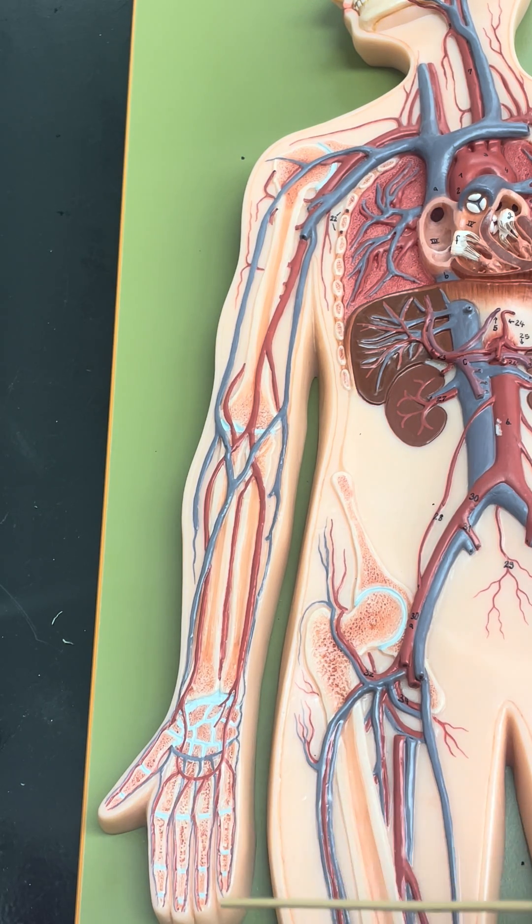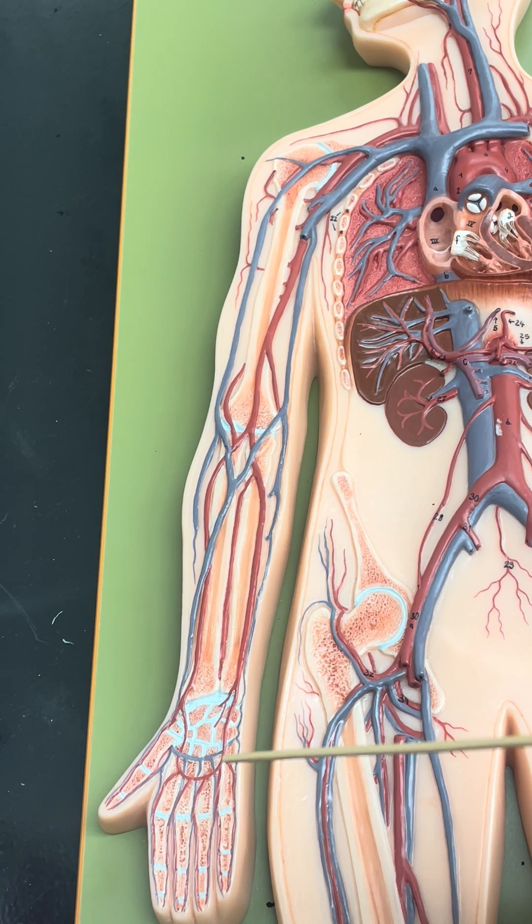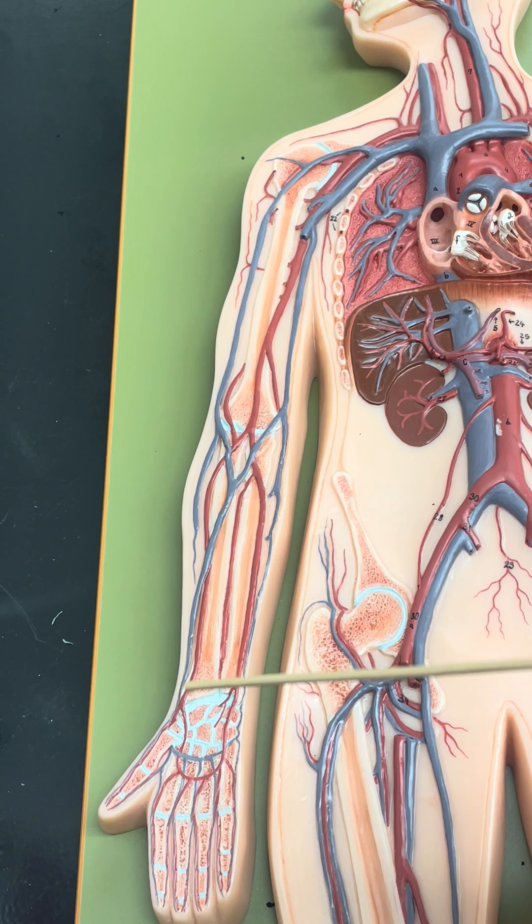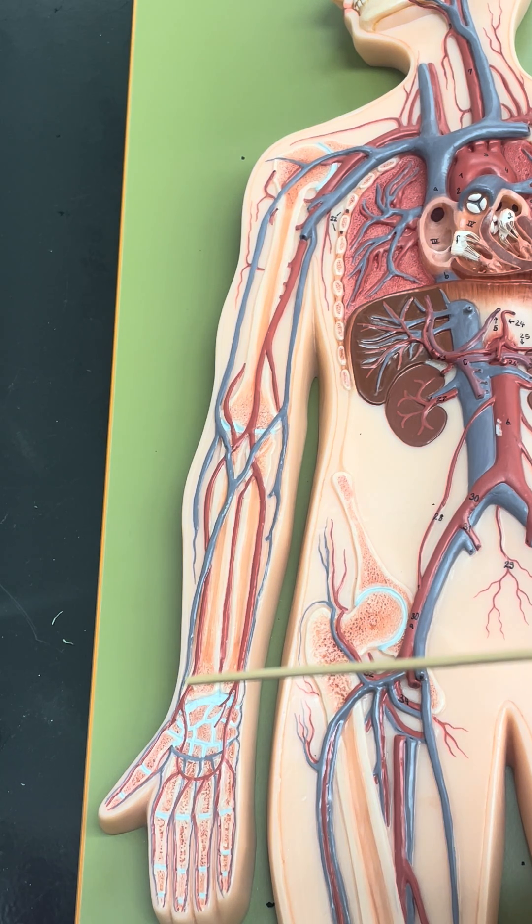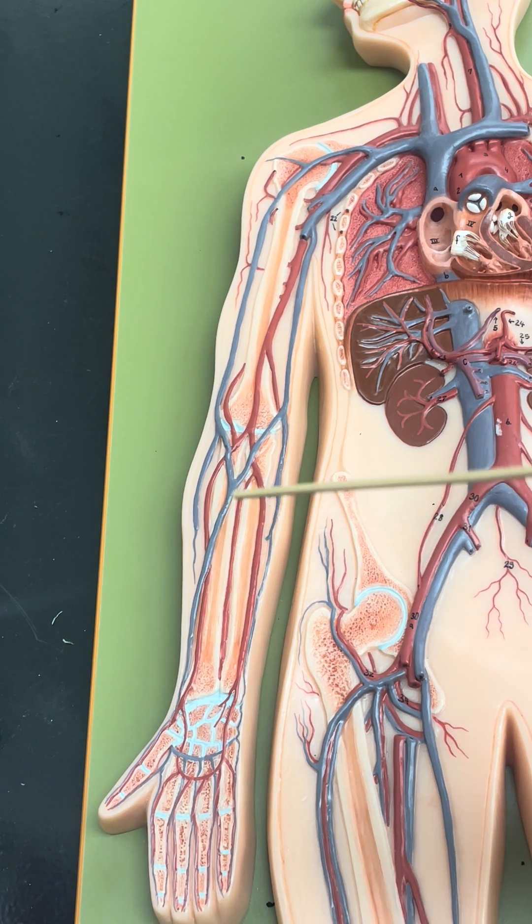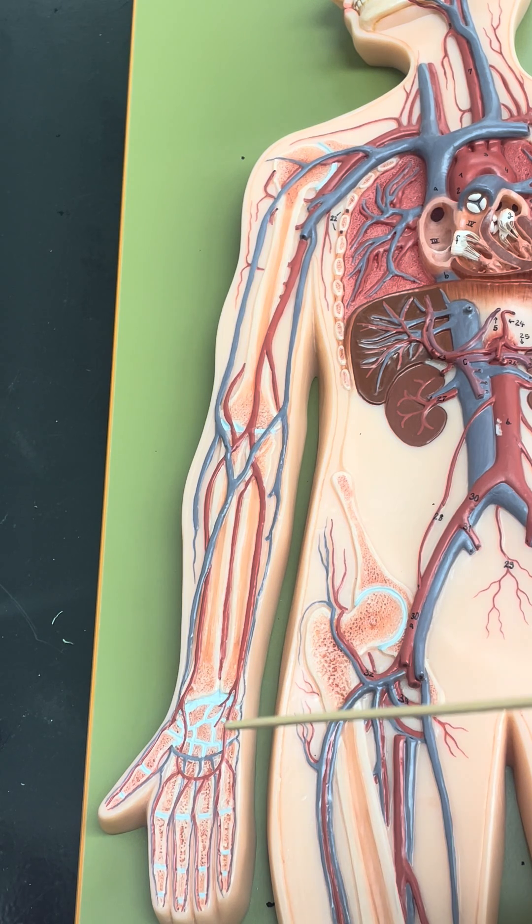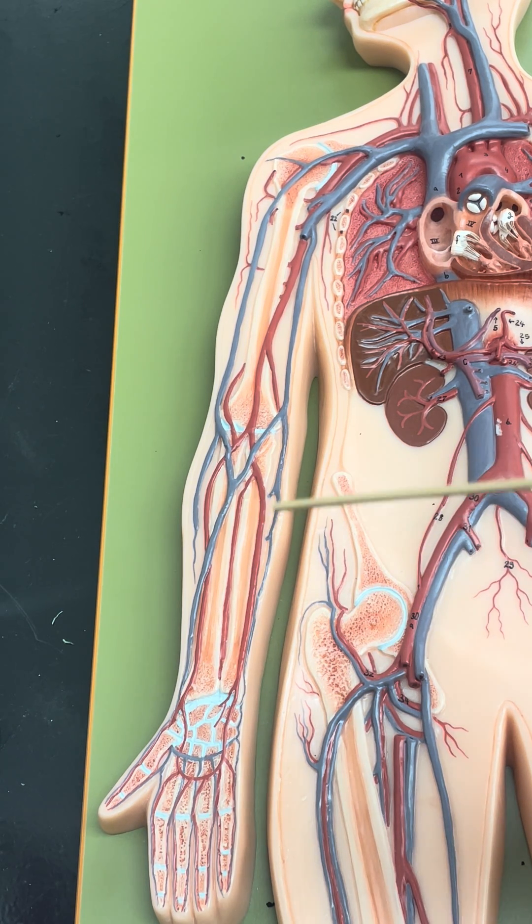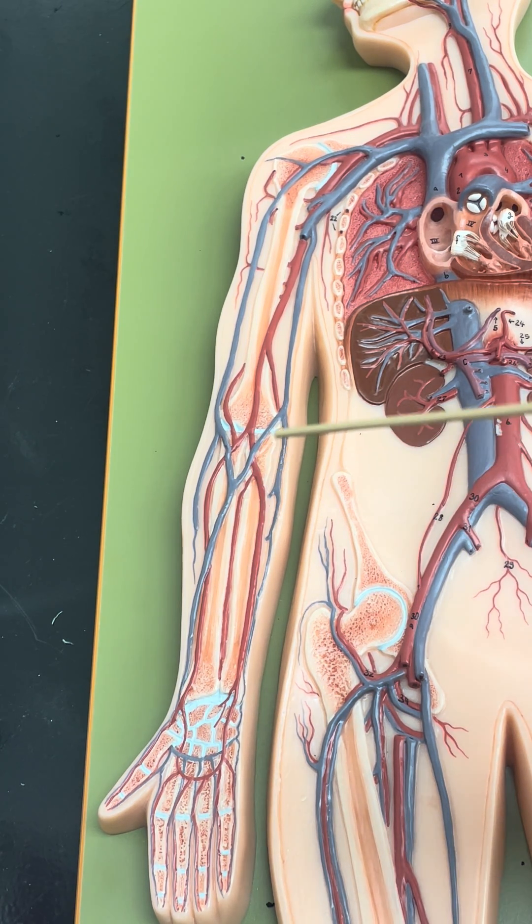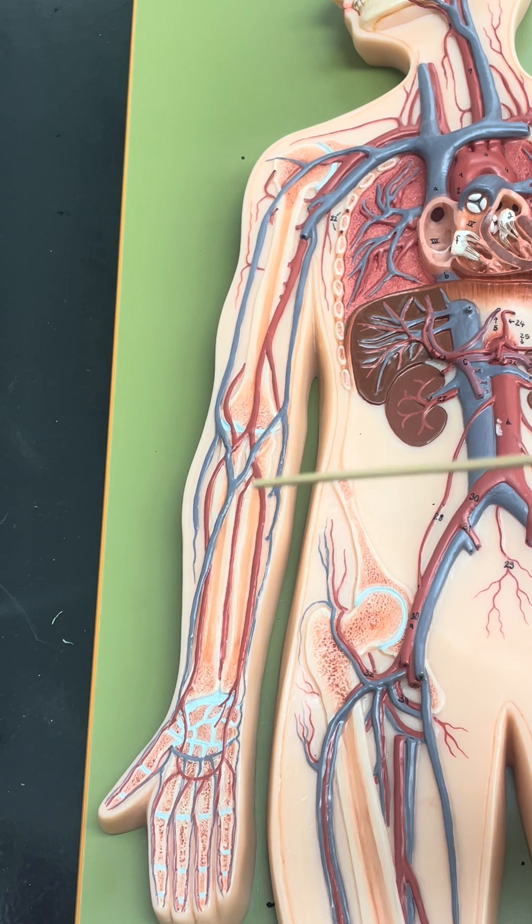To drain the deoxygenated blood, we can see some digital veins and then our palmar venous arch. The veins coming up the forearm include the radial vein here on the lateral side and the ulnar vein on the medial side. We can then see the median cubital vein crossing that elbow crease.